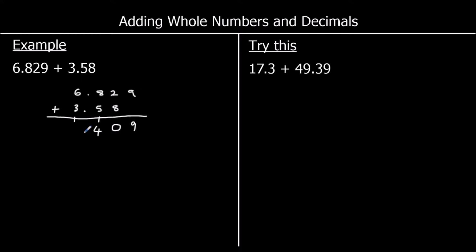The decimal point stays where it is. In the ones I've got 6 plus 3 plus 1. 6 plus 3 is 9, plus 1 is 10. So 0 goes into the ones and 1 goes over into the tens, which becomes 10. So the answer is 10.409.